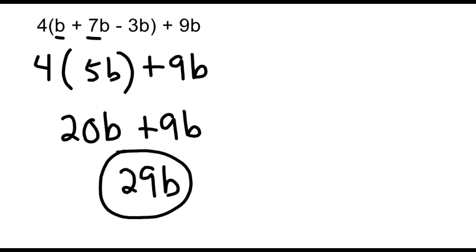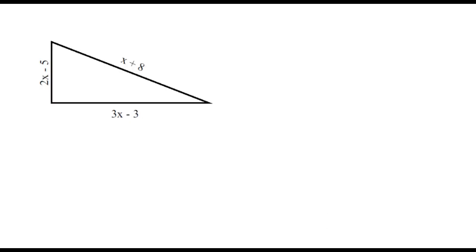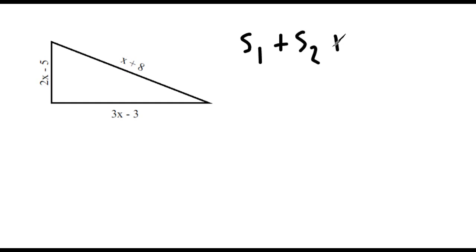The next example applies the concept of simplifying expressions by finding the perimeter of a triangle. We want to find an expression that represents the perimeter of this triangle. The perimeter of any shape is the total distance around an object — simply taking side 1, side 2, and side 3 of the triangle and adding them all together. Notice this triangle does not have whole number sides; each side is represented by an algebraic expression, but that really doesn't matter.